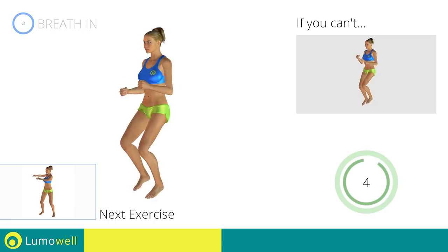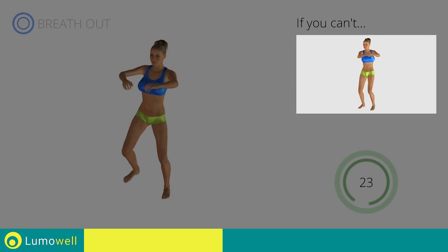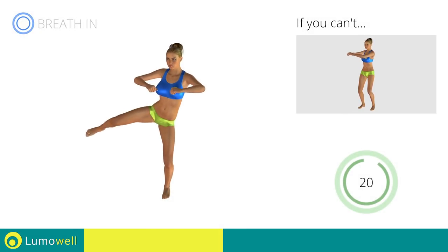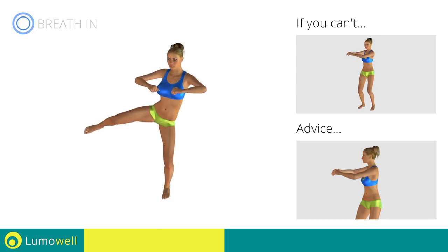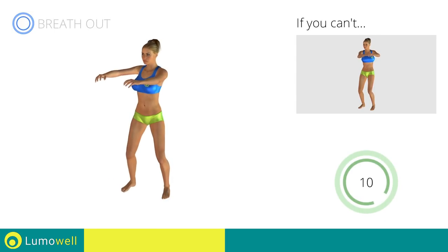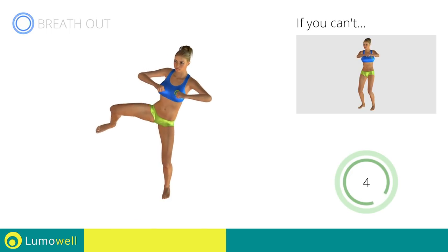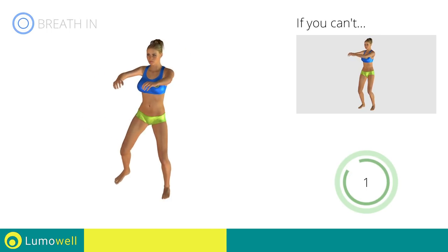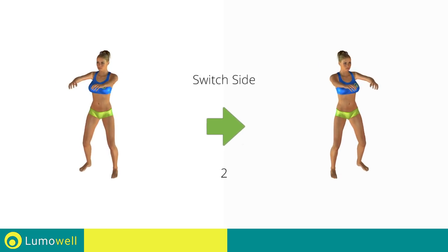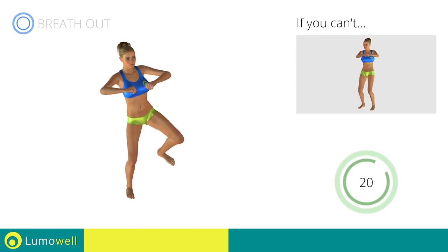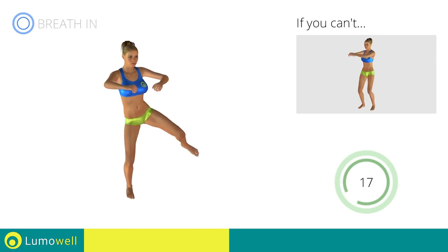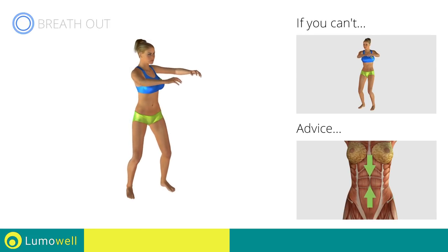Next exercise: standing twist with side kick. Go! If you can't do it, try doing a simple standing twist. Be sure to only rotate your torso — it may help to stare at a point in front of you. Switch sides in the shortest time possible. Keep your abs constantly tight to avoid burdening the spine.